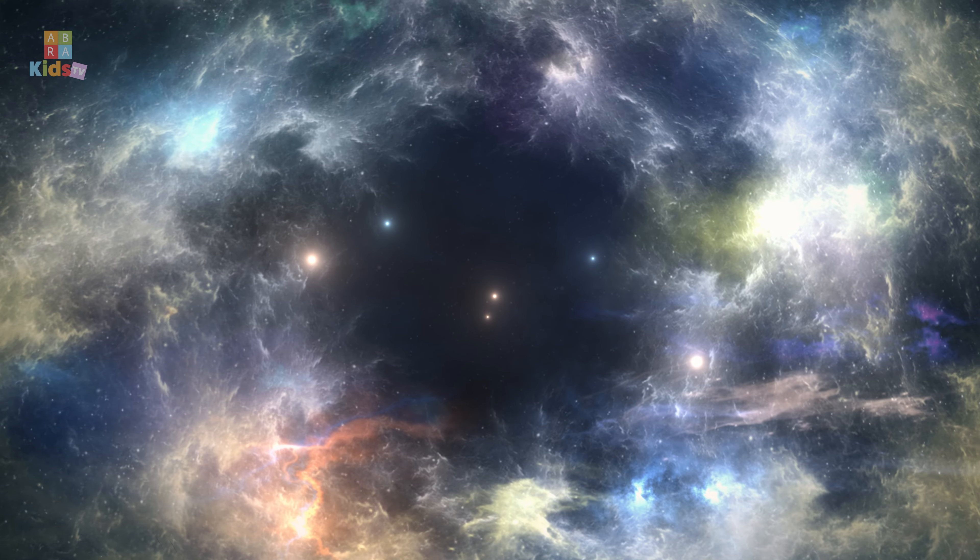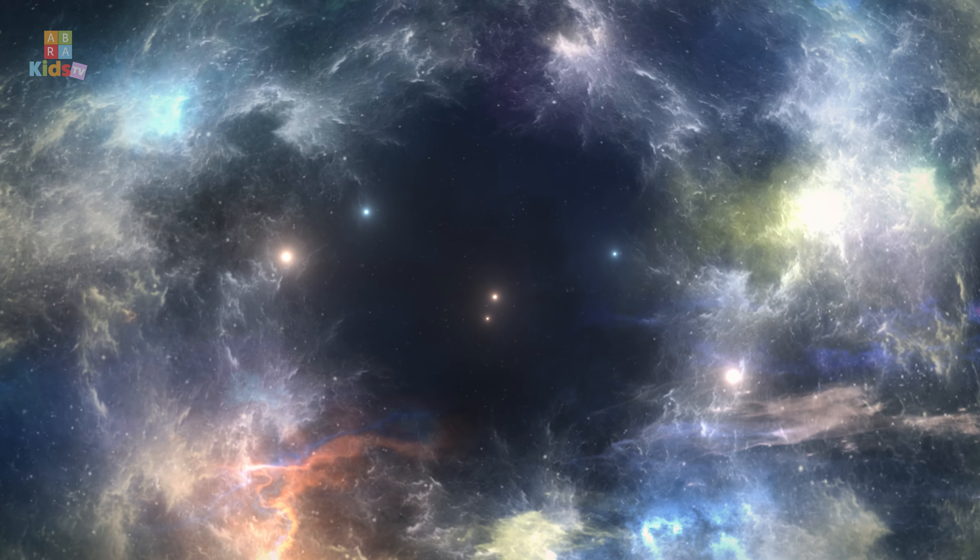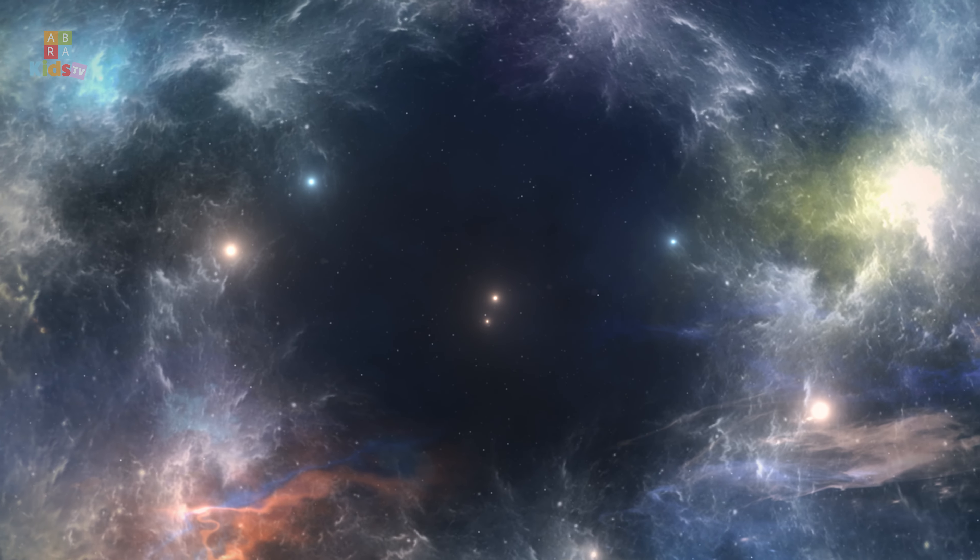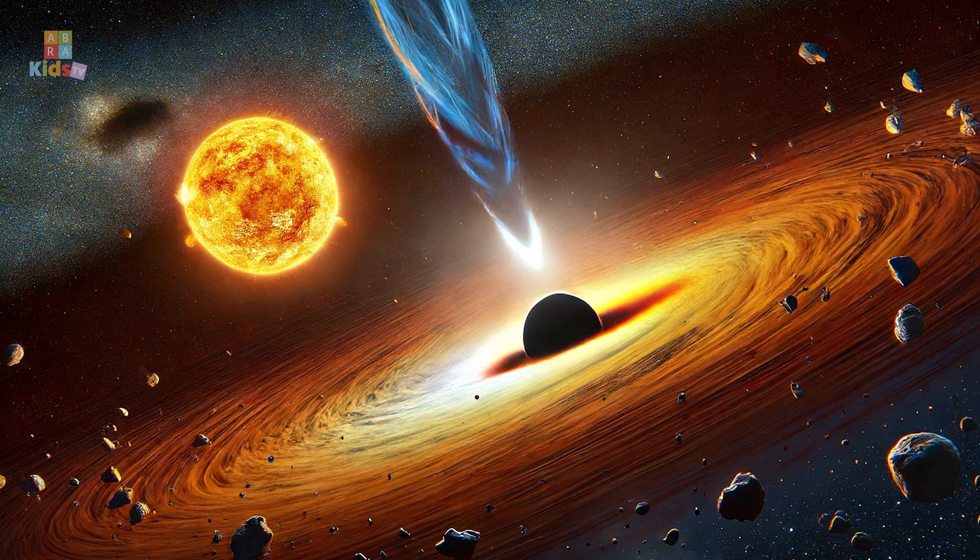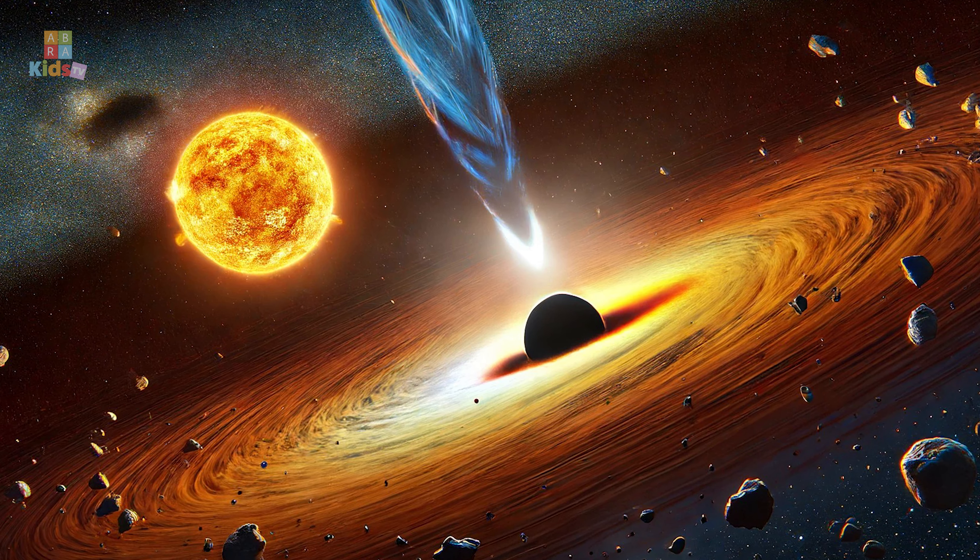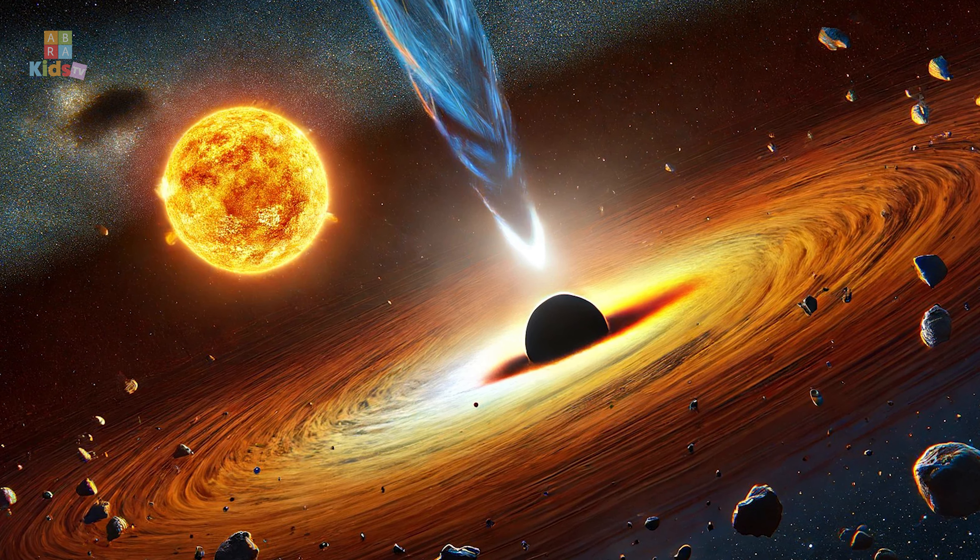Black holes come in different sizes and masses. Stellar black holes, formed from collapsing stars, have masses ranging from a few to dozens of times that of our sun.